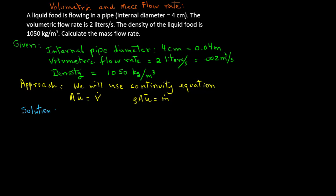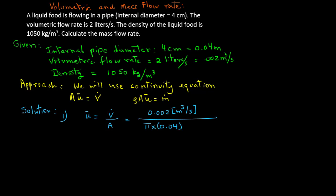The first step in the solution is to find the average velocity u-bar. Velocity equals volumetric flow rate divided by area, as obtained from the volumetric flow rate equation. We substitute 0.002 cubic meters per second in the numerator, and in the denominator the cross-sectional area of the pipe is pi times d-squared over four, where d is 0.04 meters, giving units of meters squared.